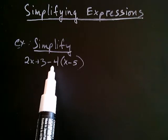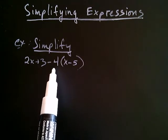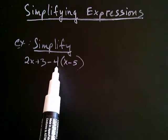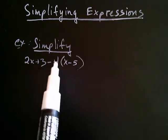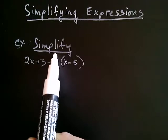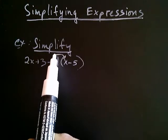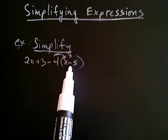So, what we'll do is we'll go ahead and we'll distribute. Now, you have options here. You can either distribute the 4, but it's easier if you distribute the negative with the 4. So, we're going to distribute the entire negative 4. That is, we're going to multiply it by x and then we're going to multiply it by negative 5.